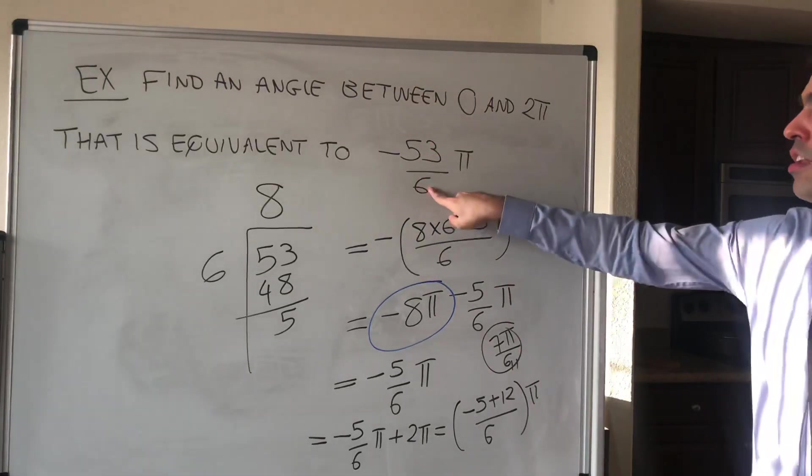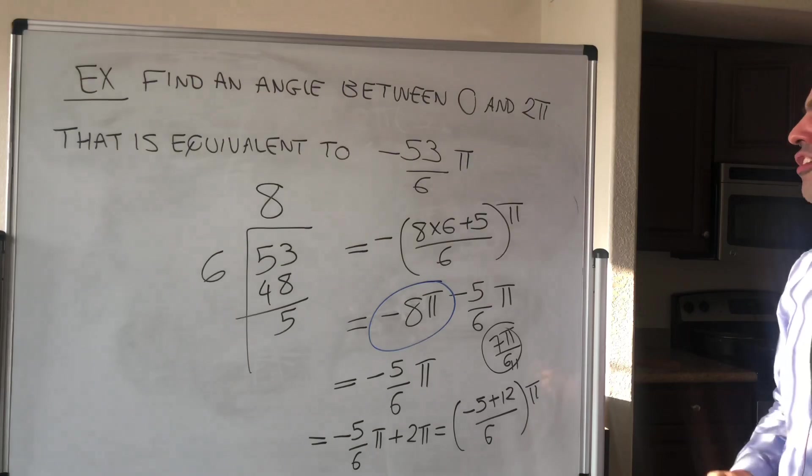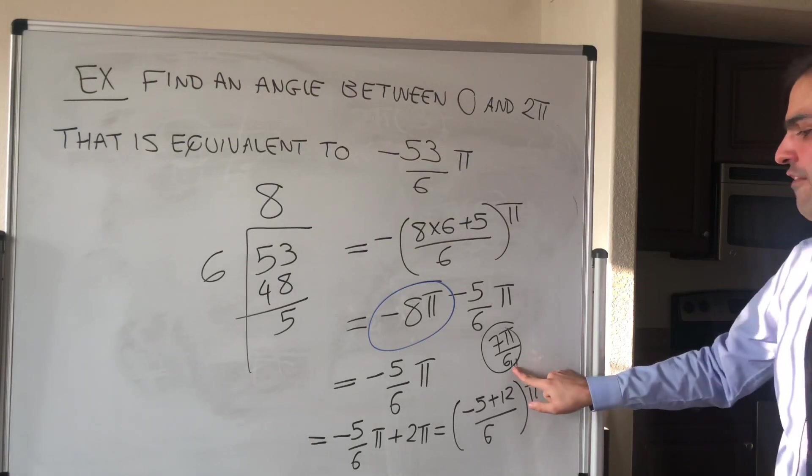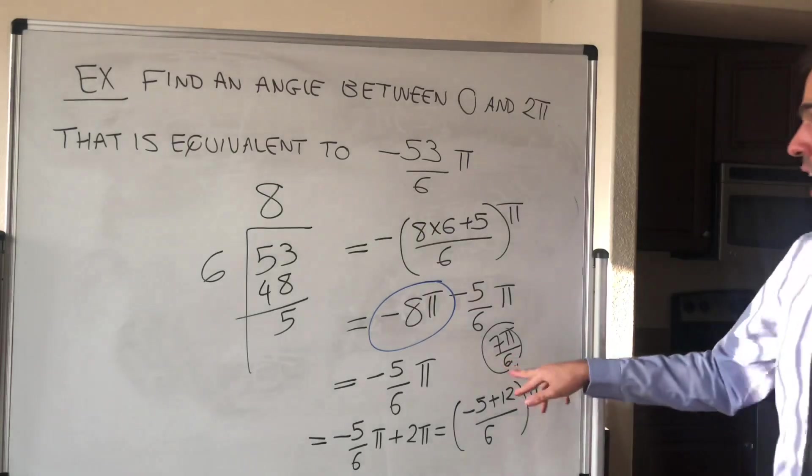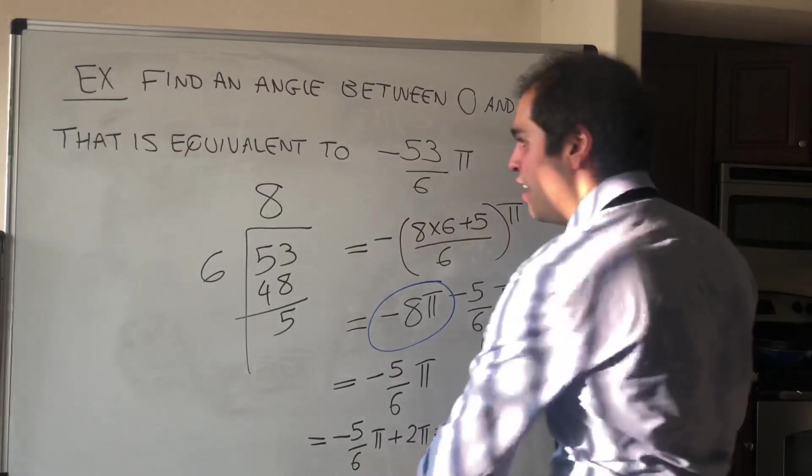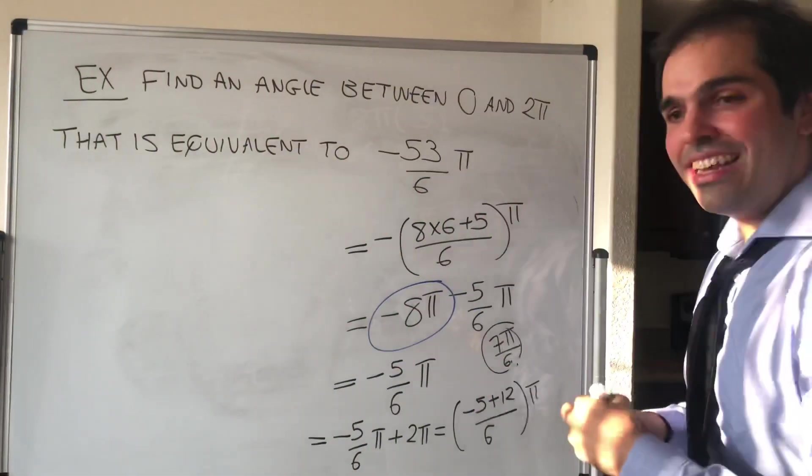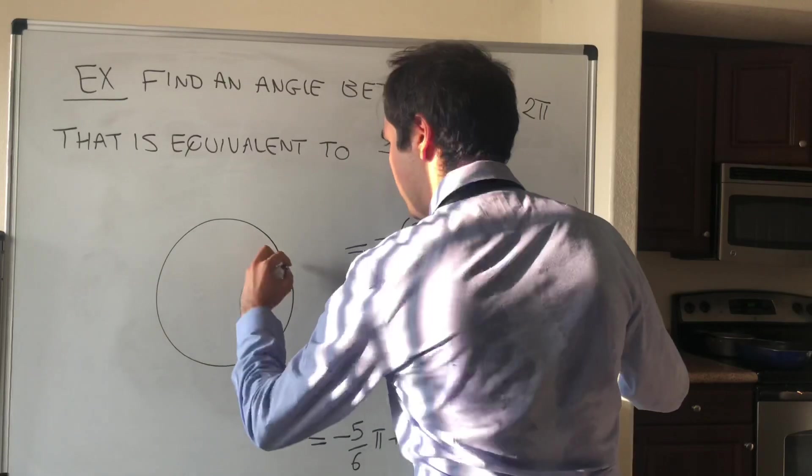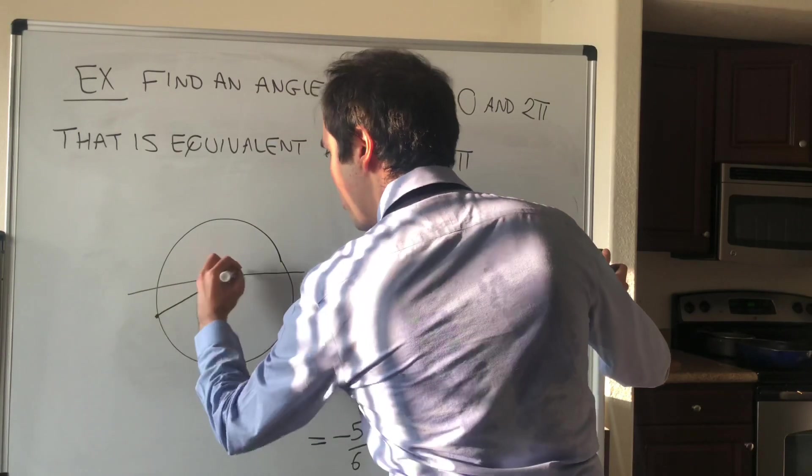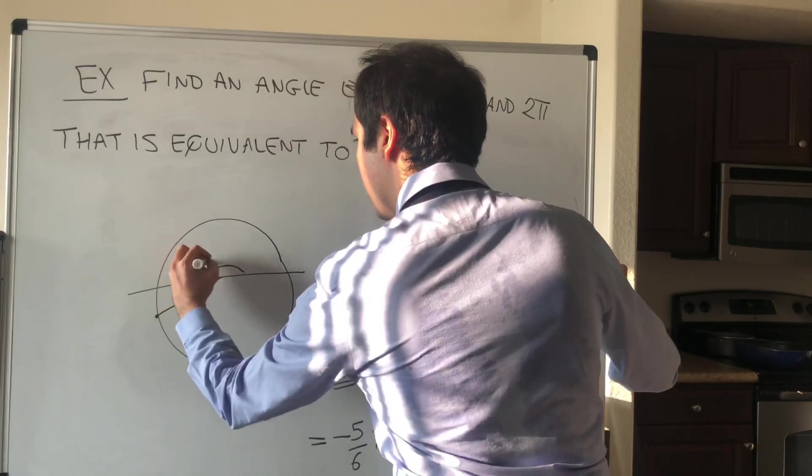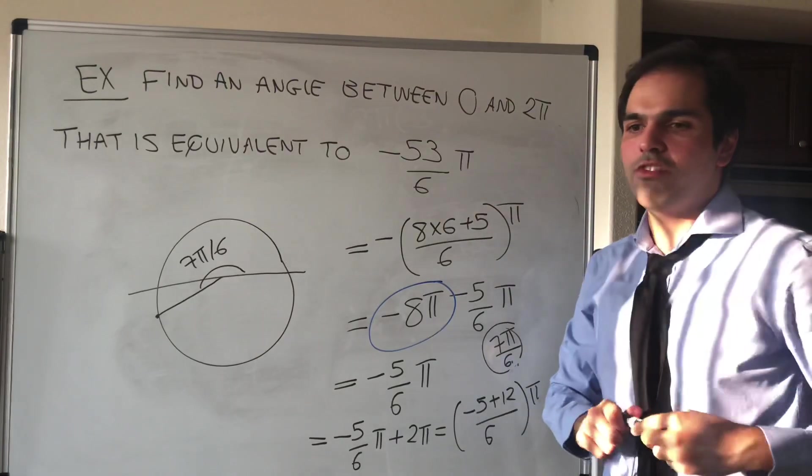So an angle that points the same direction as -53π/6 is 7π/6. And that is much easier to handle with. So I think now it's much easier to graph. So 7π/6, that's slightly more than π, so it's slightly more than the half circle, so it's probably somewhere here. You see, which is much easier to draw than -53π/6.